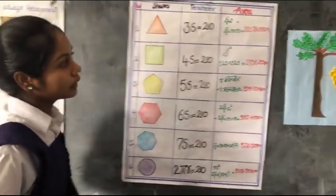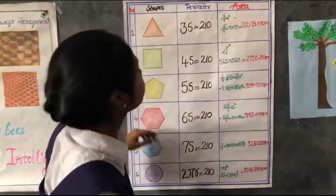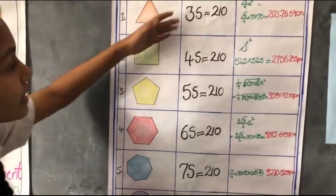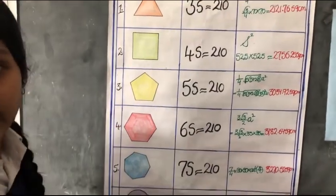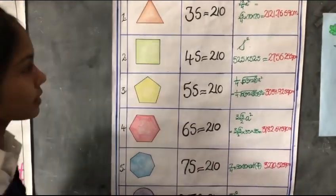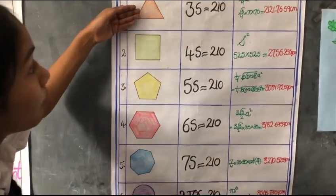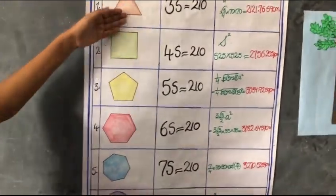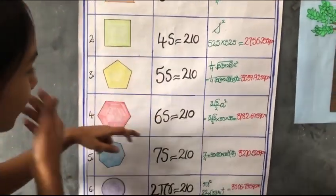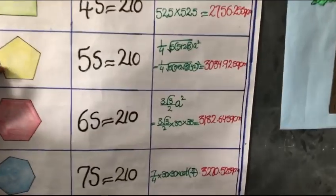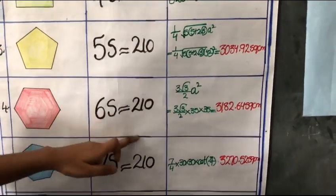we notice that with the same perimeter, the area of the polygon increases with the number of sides. See, square has more area than triangle with the same perimeter. Pentagon has more area than square, the same perimeter. Hexagon has more area than pentagon, the same perimeter.